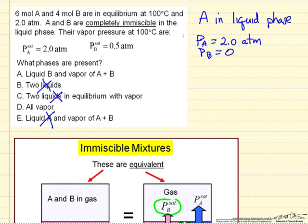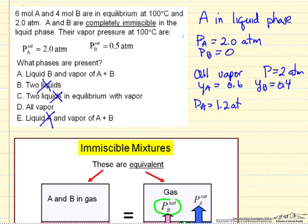Let's suppose instead we have all vapor. Well, then the mole fraction of A would be 0.6, the mole fraction of B would be 0.4. Remember the total pressure is 2 atmospheres. So that means the pressure of A is 0.6 times 2, 1.2 atmospheres, and the pressure of B is 0.4 times 2 is 0.8 atmospheres.